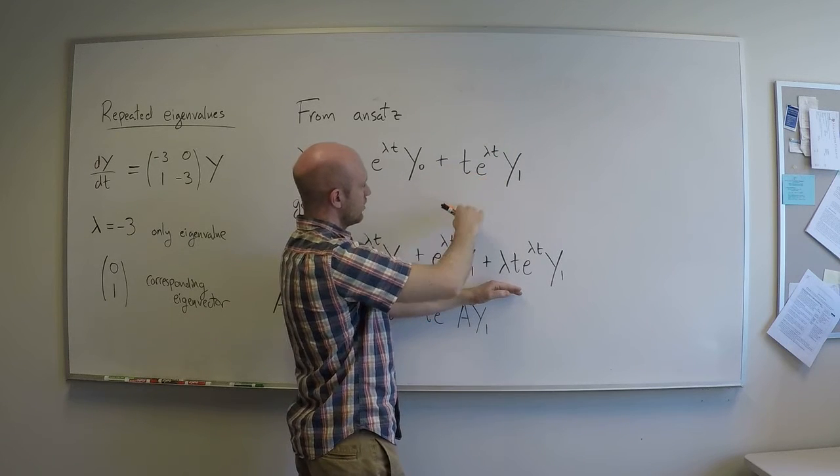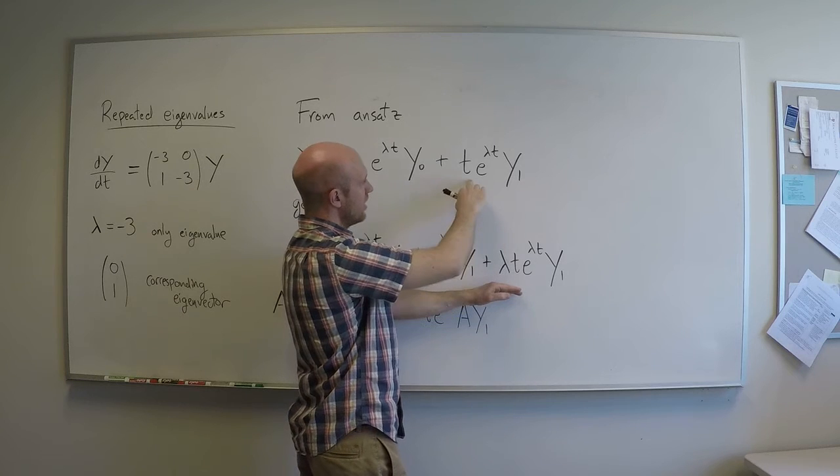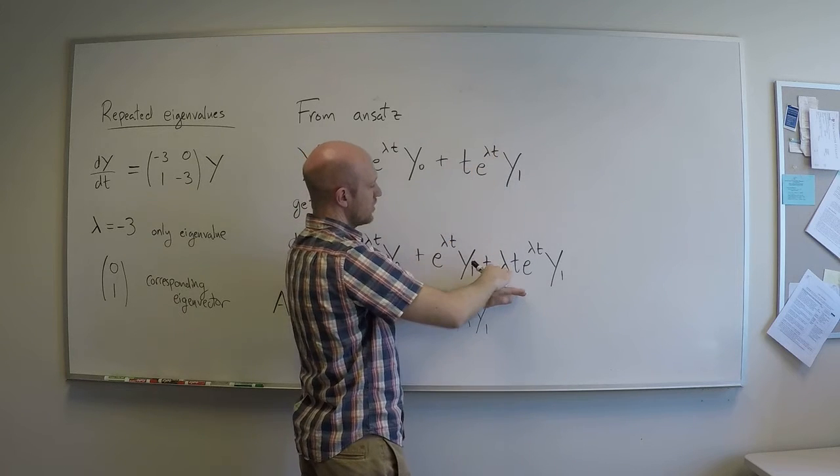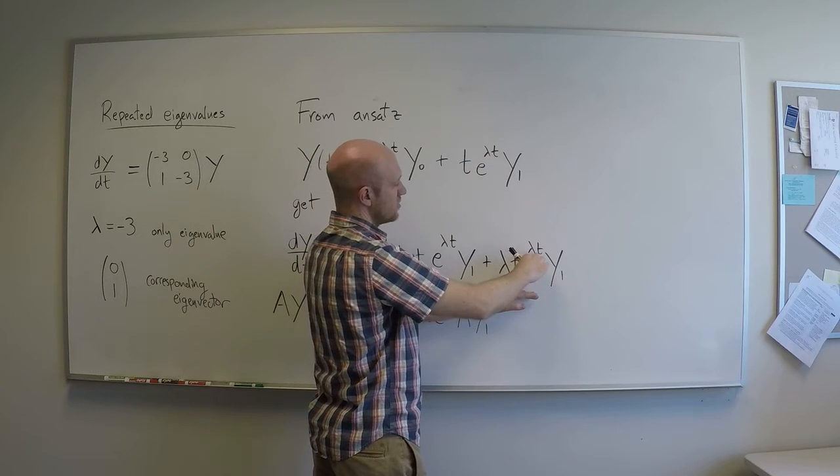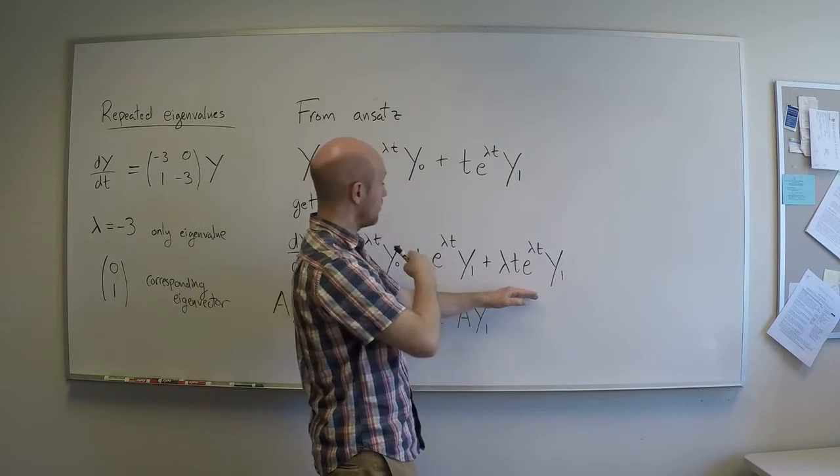So by the product rule, the first term is e^(λt)y1, plus the derivative of the second part of the function, so I get λt*e^(λt)y1. That's the derivative part, the dy/dt.